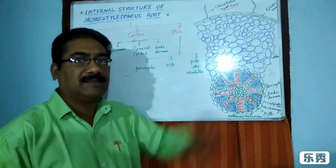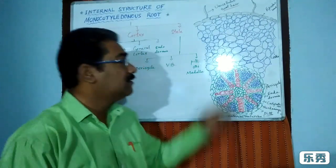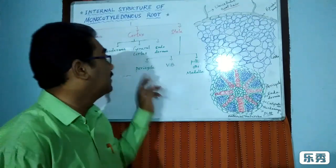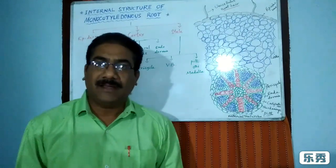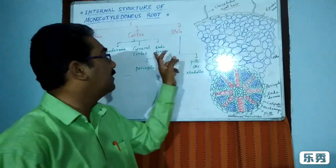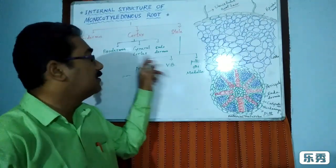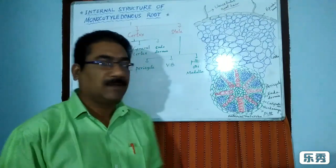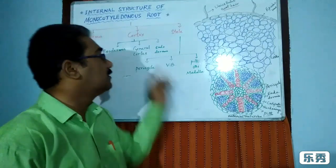The general cortex is made up of parenchymatous cells with intercellular spaces — loosely arranged, unlike the epidermis where intercellular spaces are absent. The general cortex also stores food materials and is useful for the conduction of water and food materials.